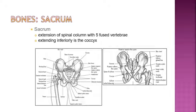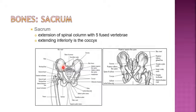The sacrum consists of five fused vertebrae, and then inferior to that is your coccyx, or tailbone. Looking at the anterior and posterior views: here is the sacrum, and the sacroiliac joints are what connect the sacrum to the pelvic bones. You have the five fused vertebrae and then the coccyx right there. The coccyx is also composed of fused vertebrae.